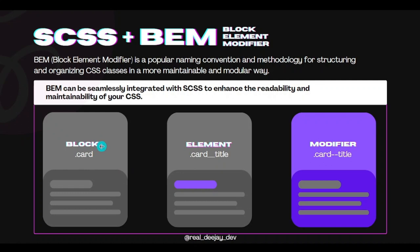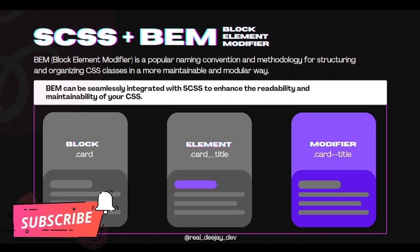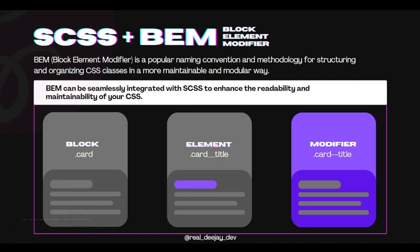For example, the block is the card — we give it a class of 'card'. The element would be the title, named 'card__title' with a double underscore. Anyone reading the code will immediately understand by that double underscore that this is an element inside a block. The modifier uses a double dash — like 'card--title' — and it modifies the element or the block.